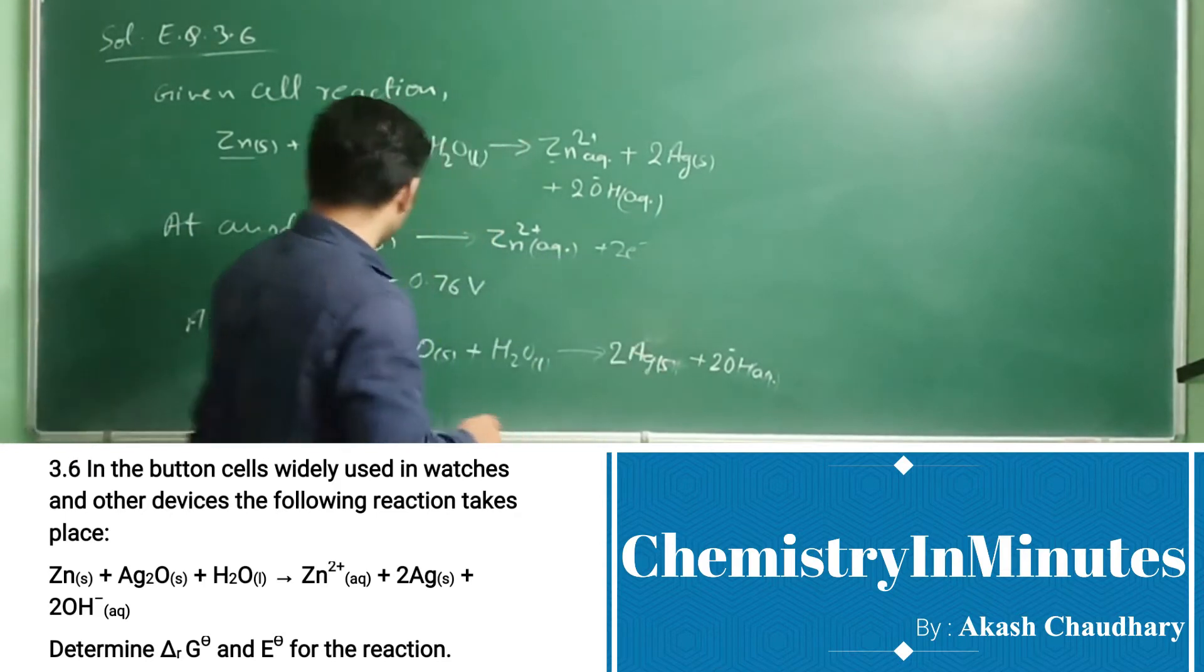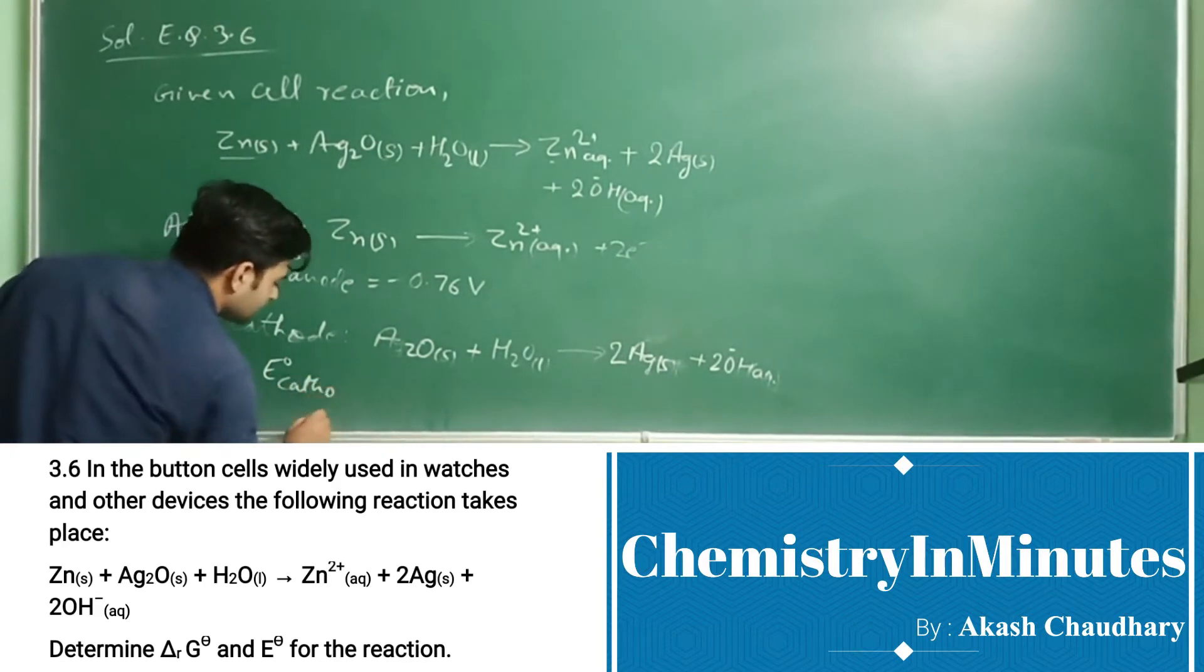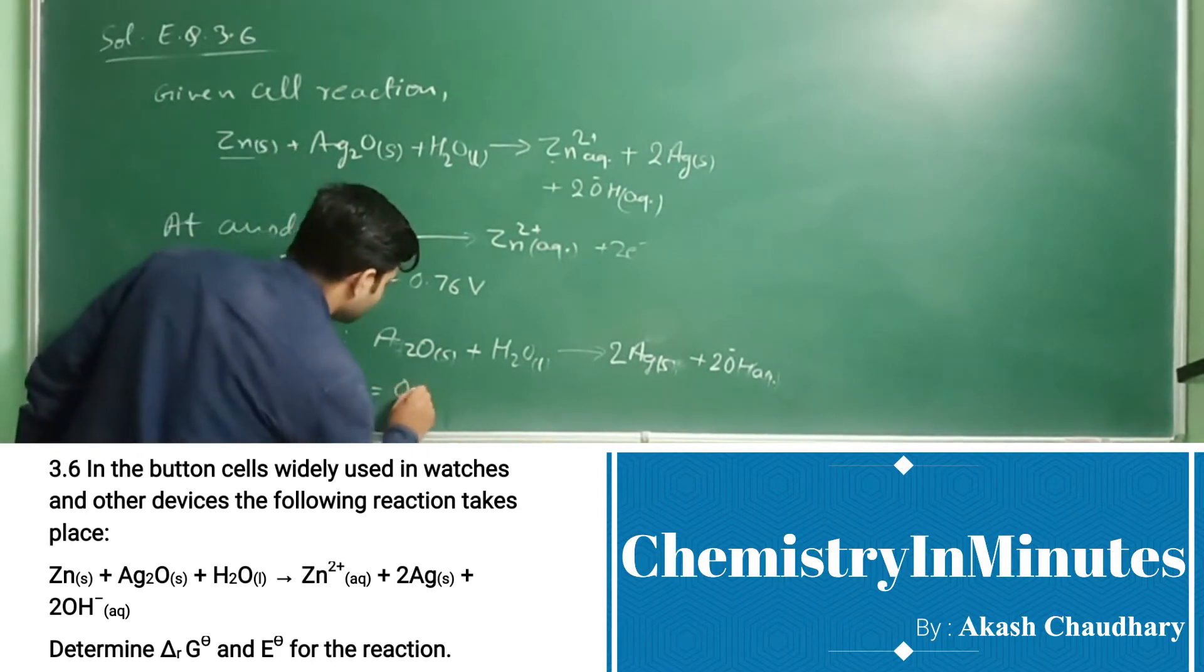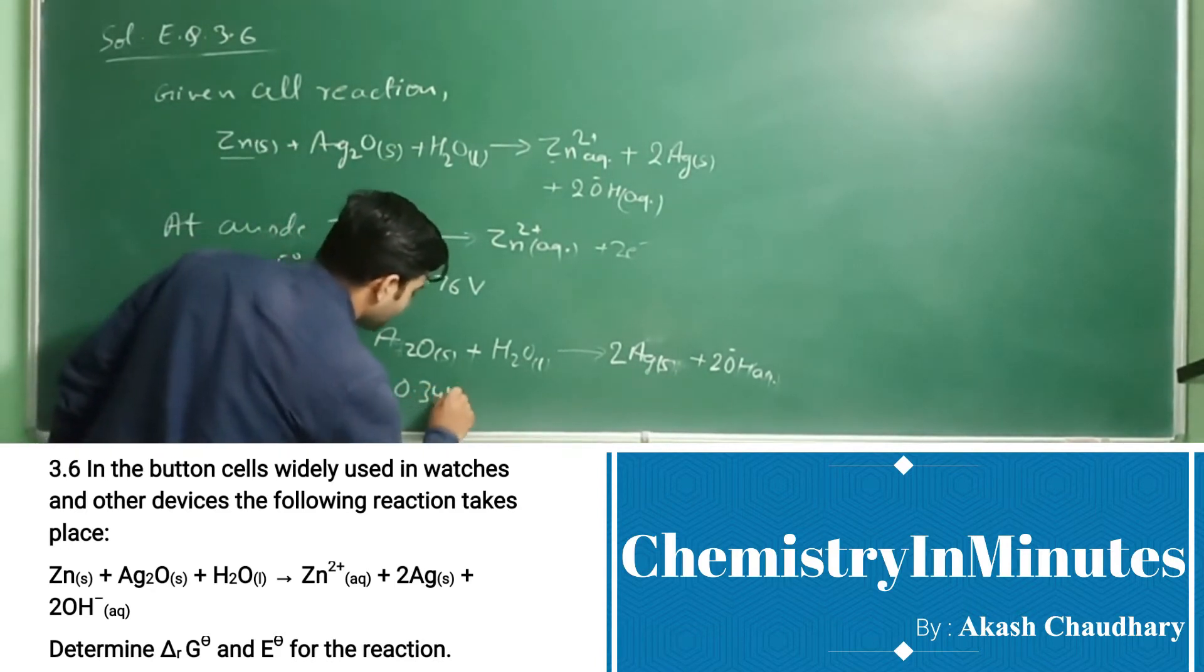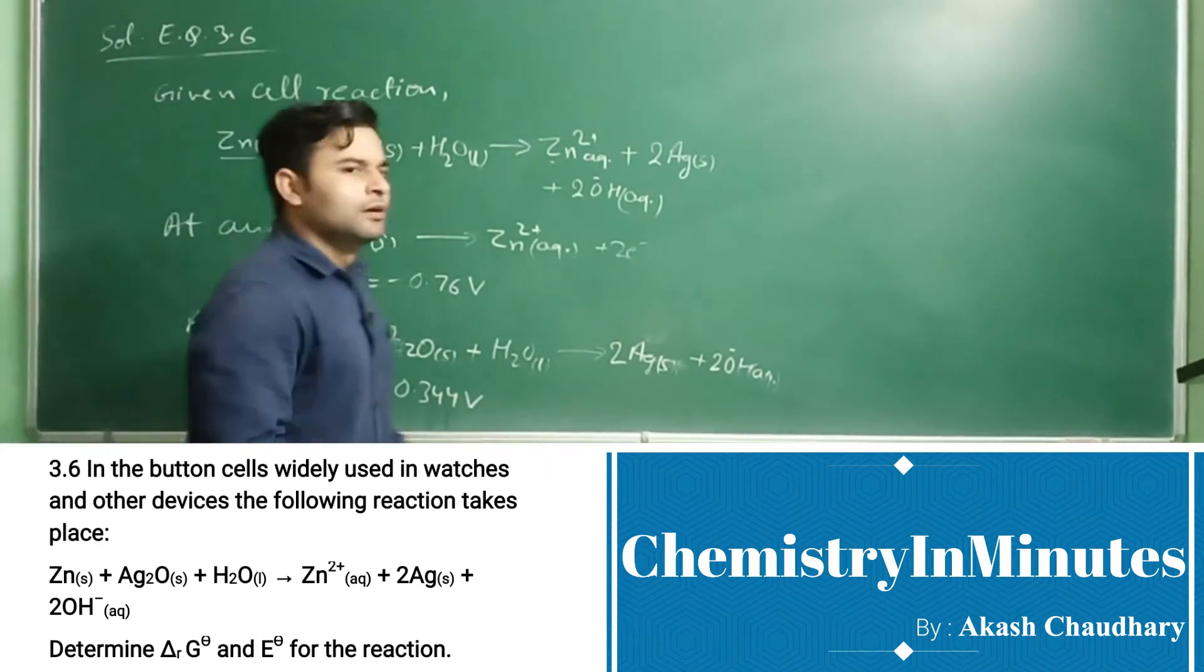The E0 value of this reaction, E0 cathode, equals 0.344 volt.